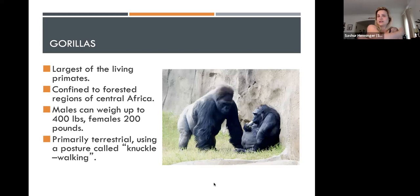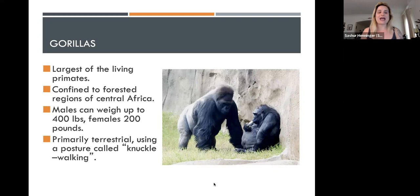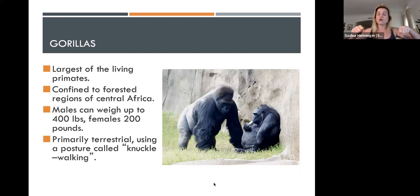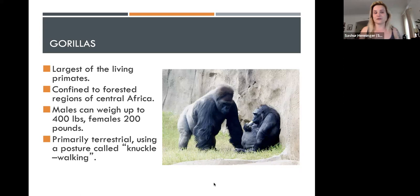Gorillas are unique — the largest living primate — confined to a specific area in Central Africa. Males weigh 400 pounds or beyond, with females weighing about half that. Males have highly specialized skull structures: huge sagittal crests for muscle attachment to deal with sheer body size. They are technically brachiators, but adult males cannot brachiate because of their size — females and children can. As adults they use a specialized terrestrial walking method called knuckle walking, with special pads on their knuckles, walking on their fists — differing from baboons that walk on the tips of their fingers.